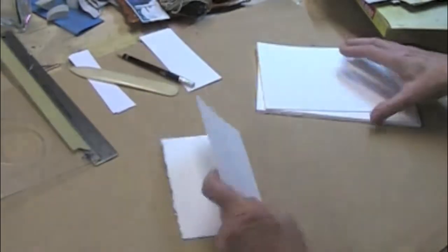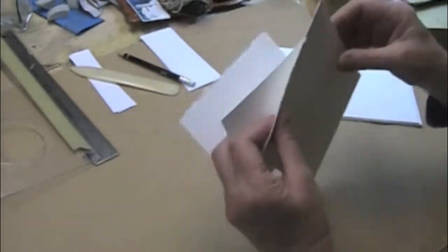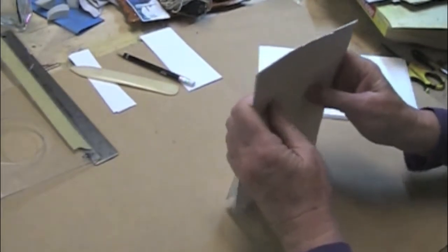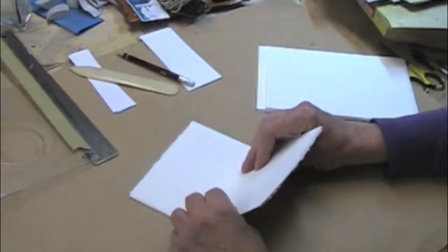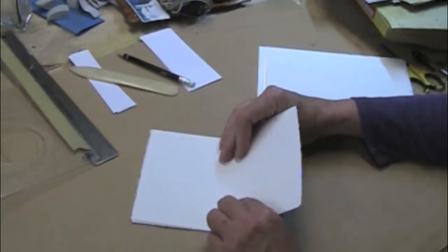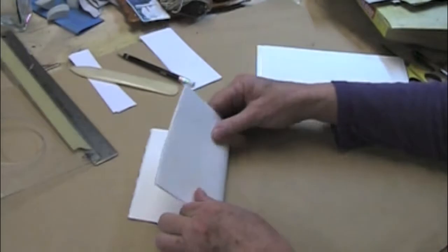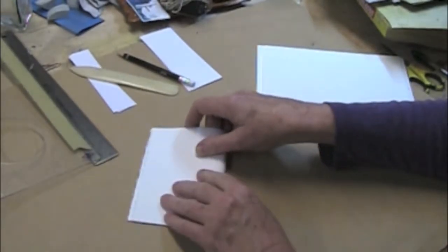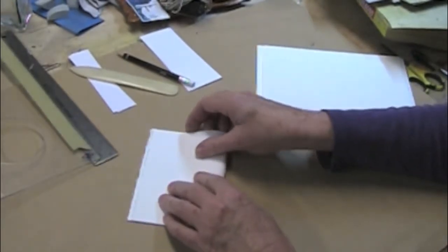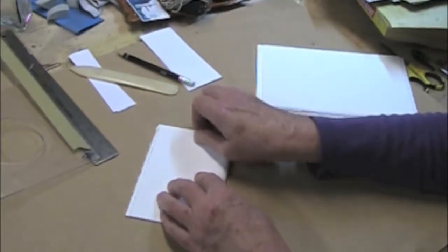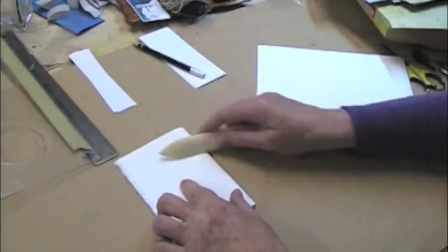A signature is a set of folded papers. I always fold my papers together because of the increase in the angle of the spine, and you'll see what I mean in just a second. If you've never done any bookbinding, always fold a signature all together.